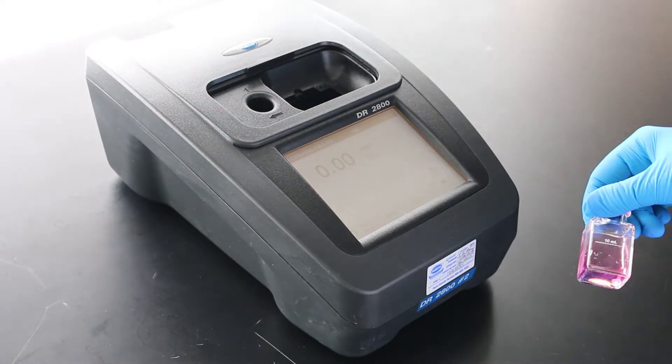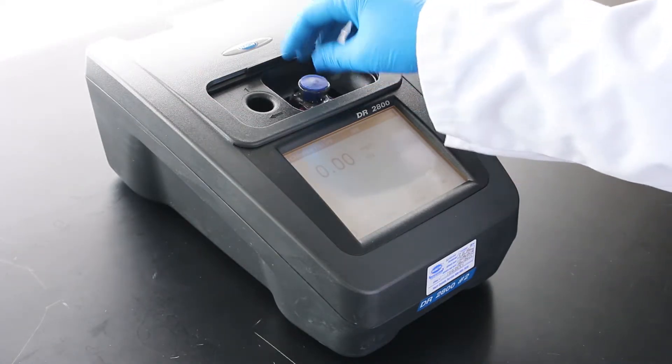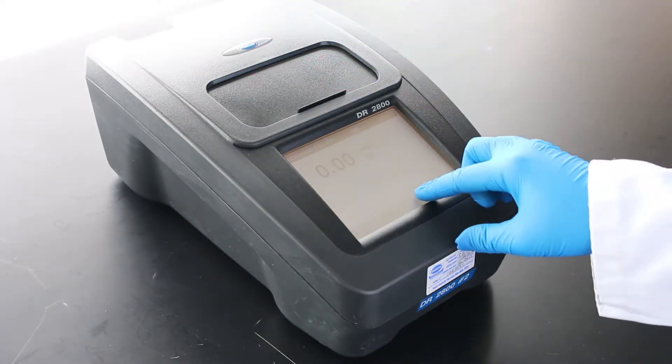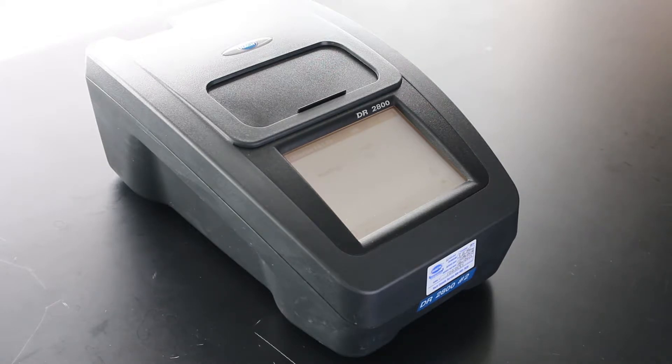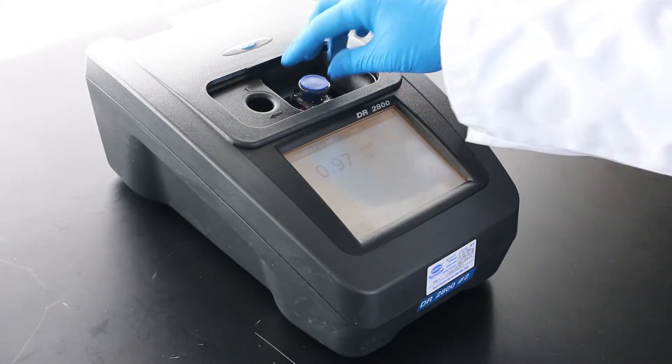Within three minutes after the timer expires, insert the sample cell into the instrument and read the sample. The results will show in milligrams per liter of chlorine.